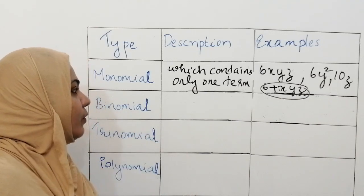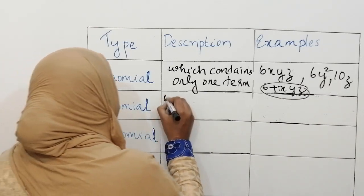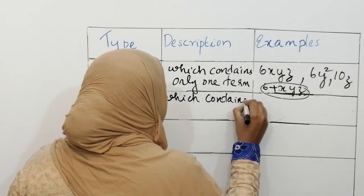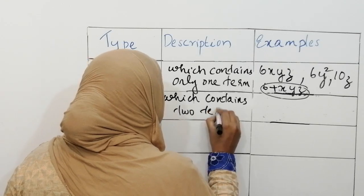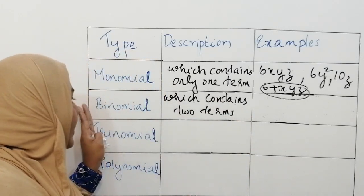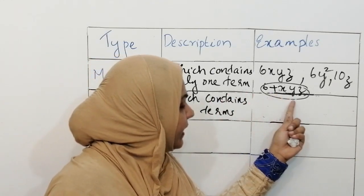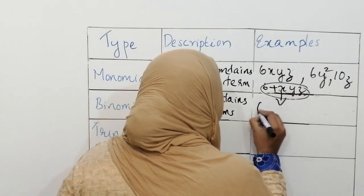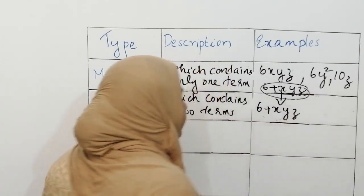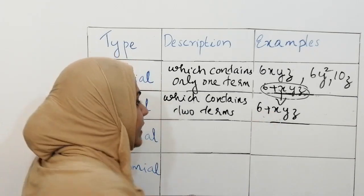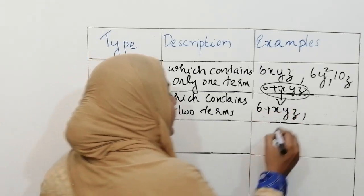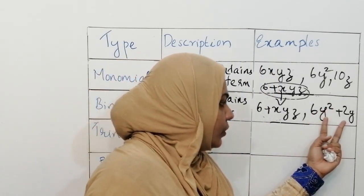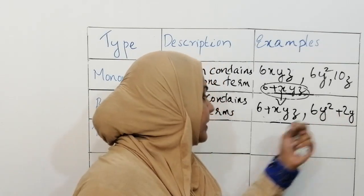Next, let's check what is binomial. Binomial contains two terms. As already explained, 6 plus xyz has two terms separated by a plus sign, so it comes under binomial. We can write 6 plus xyz as an algebraic expression which contains two terms. Other examples also have two terms separated by a plus or minus sign.